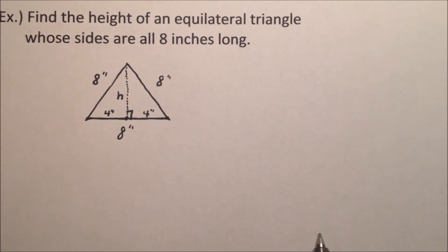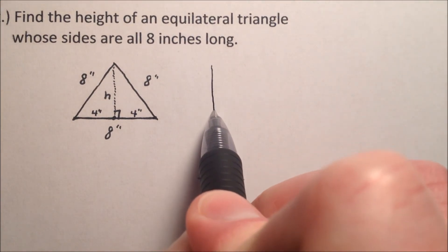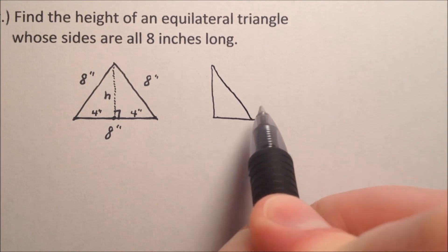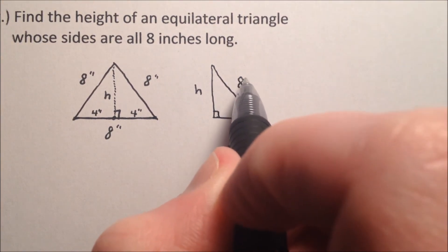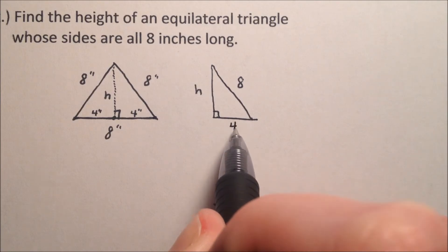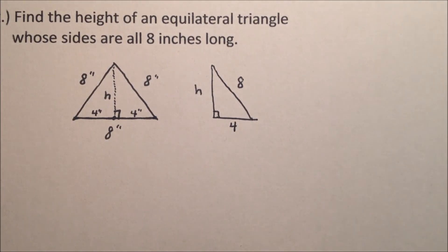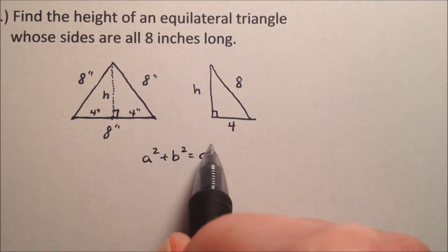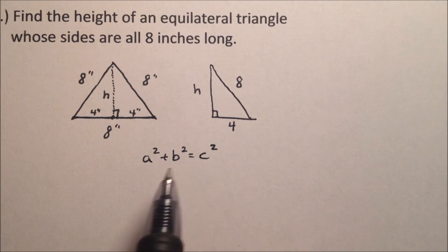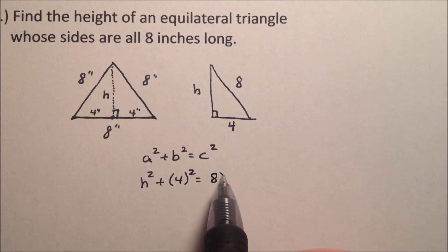So I could redraw that, if you would like, just to be one triangle. Okay? So here's the height. We're not sure what that is. Our hypotenuse is 8 inches, and this base over here is going to be 4 inches. Okay? So let's solve for H. We have a² + b² = c². So this a value is going to be this H. So we could say the height squared plus 4² equals 8².